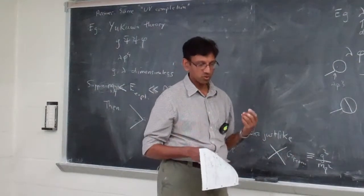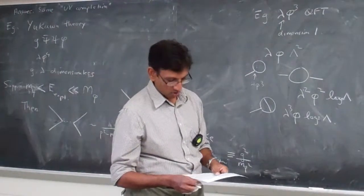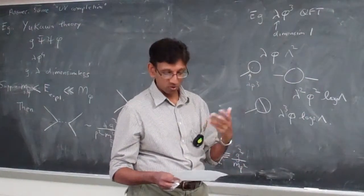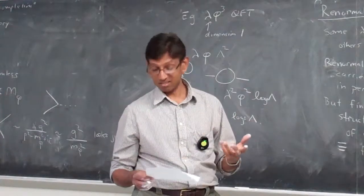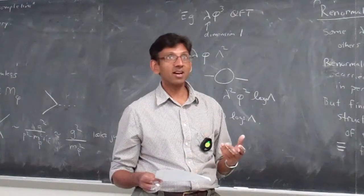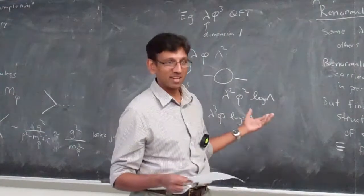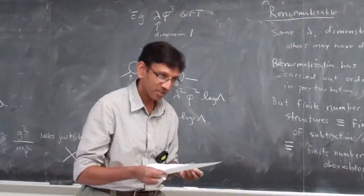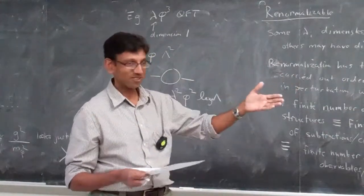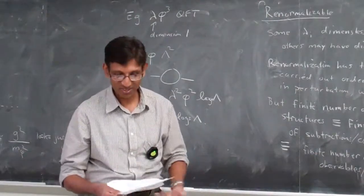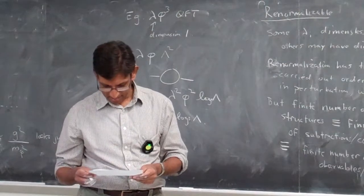There's a benefit for a theorist of calculating with fewer moving parts. The smart effective-field-theory-trained modern theorist often knows the UV-complete theory and yet does not work directly with it — they figure out what is the matching effective field theory, which is non-renormalizable, and compute with this whenever it is in the domain of validity in energy. Only when they need to go to high energies do they bring out the big guns and use the full theory.